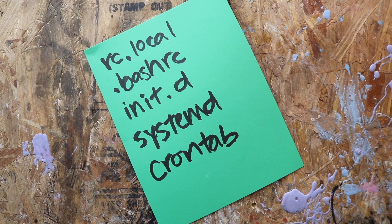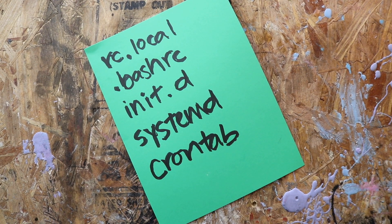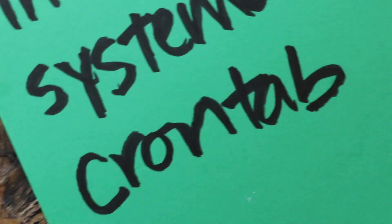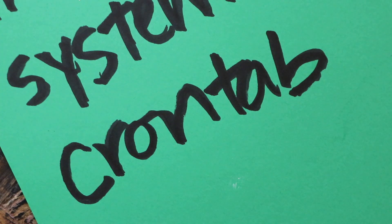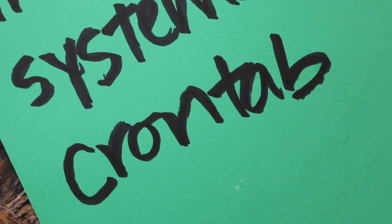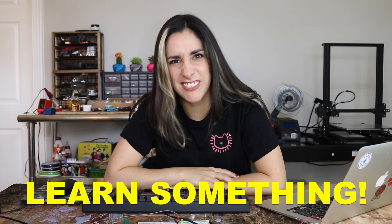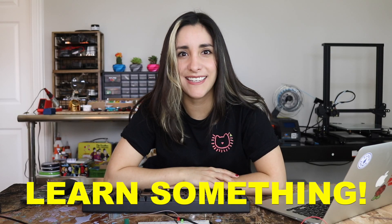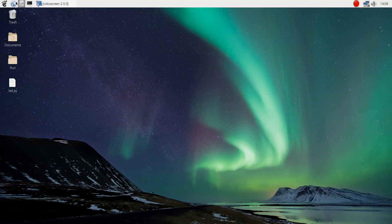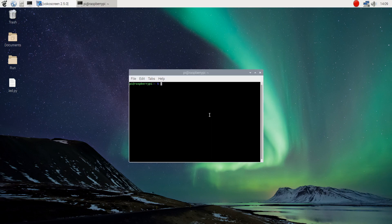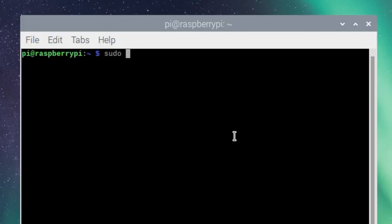There are several ways to do this, but I'm going to focus on only one because that's the one that I use and it works well. To start a script at startup, open the terminal on your Pi and type sudo crontab -e.